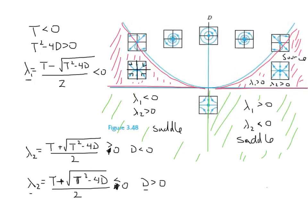To summarize: if our trace and determinant place us in the upper left region above the parabola, we have a spiral sink. In the upper right region above the parabola, we have a spiral source. On the positive d-axis, we have a center. In quadrant 2 below the parabola, we have a sink. In the corresponding region on the right, a source. And anything below the t-axis — including where d equals 0 and t equals 0, which we'll discuss later — is a saddle.